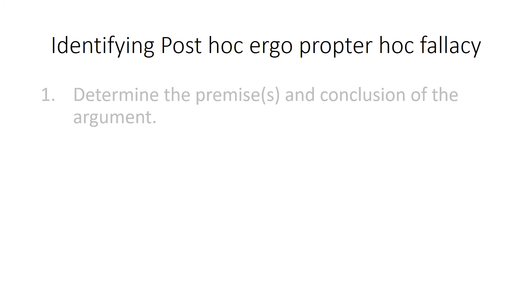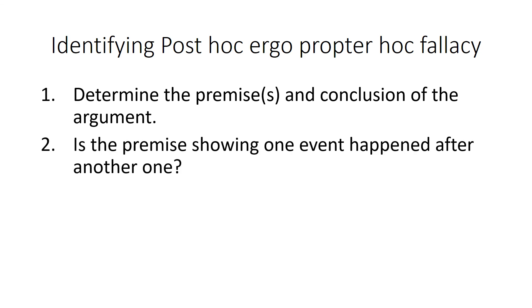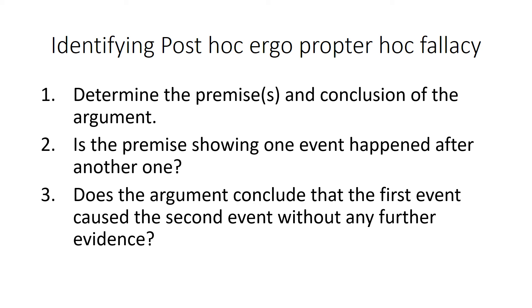How do we identify this fallacy? First, determine the premises and conclusion of the argument. Then ask: is the premise showing one event happened after another? If yes, ask: does the argument conclude the first event caused the second without any further evidence? If yes, this is a post hoc fallacy. You can argue one event caused another successfully, but you have to single out every other possibility and show exactly why.